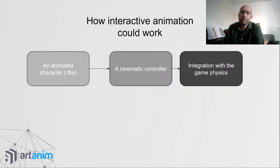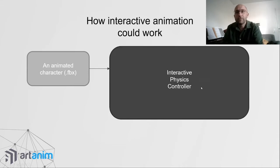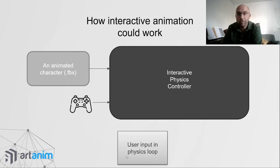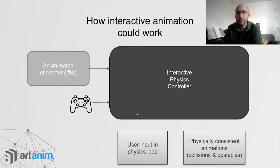The idea in physics-based animation is that instead of having those three separate steps — animated character, kinematic controller, and game physics — we replace them with a bigger interactive physics controller. In this single block, you integrate both the user input, creating movements that are physically consistent, and the collisions and obstacles, creating much more believable and realistic behavior.